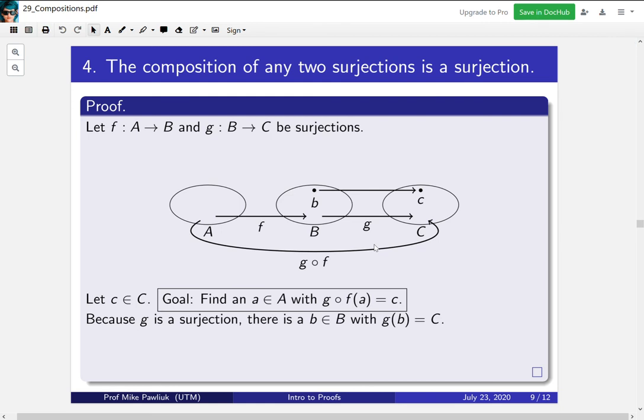So because G is a surjection, it means that there's some element of B that maps to it. Now what can we apply? Now we apply surjectivity of F. So because little b is inside here, and F reaches everything inside capital B, we know there has to be an element in A. So because F is a surjection, we know that there's some element of A here that maps onto it. Now do we have an element of A that maps all the way over to C? Yes, in fact this one will do it.